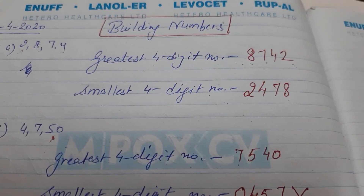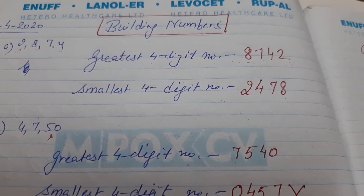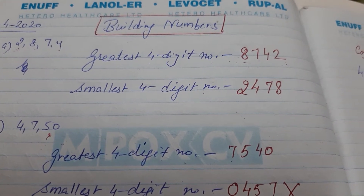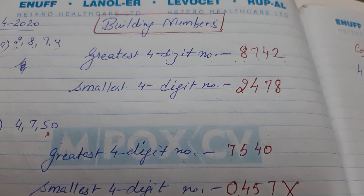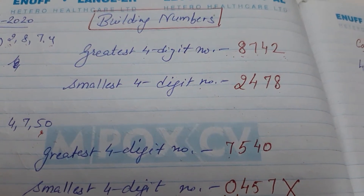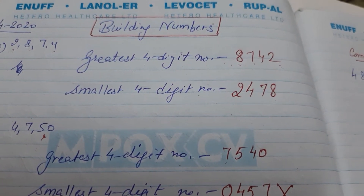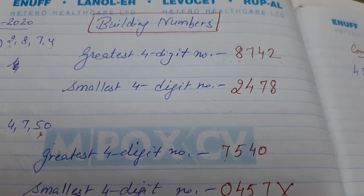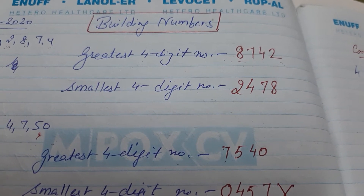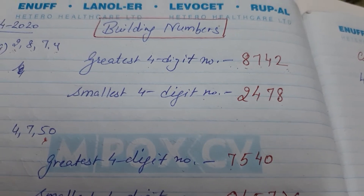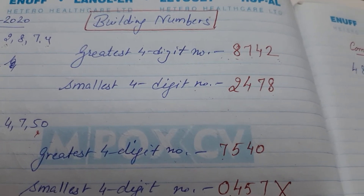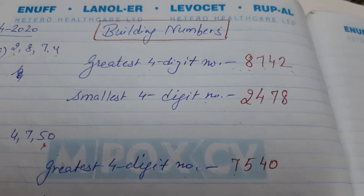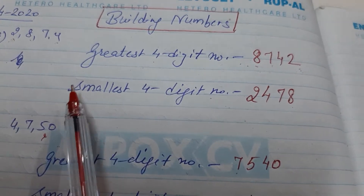Good morning everyone. Today I am going to take the topic of building numbers. Building numbers means we have to make four-digit numbers — greatest and smallest — using the given digits.